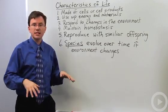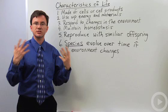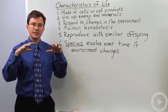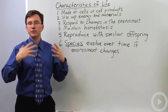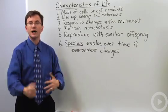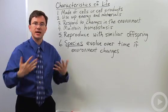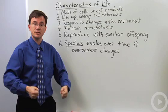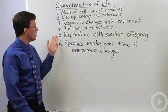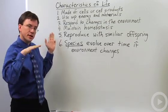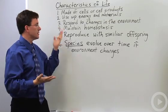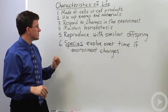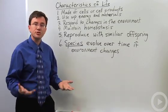We maintain homeostasis — this kind of goes hand in hand with responding to changes in the environment. Homeostasis is the idea that we try to maintain an internal balance. For example, if I get too hot I start to sweat to get rid of the excess heat; if I get too cold I start to shiver, doing muscle contractions to help release some additional heat energy. Body temperature maintenance is an example of homeostasis.